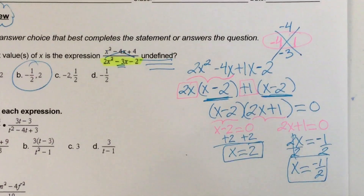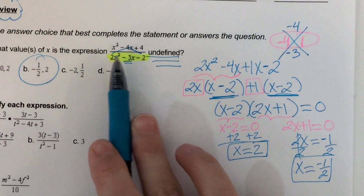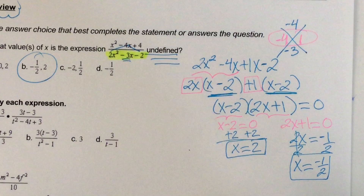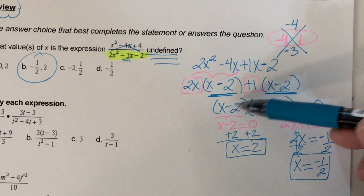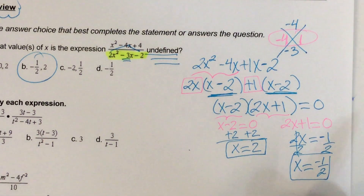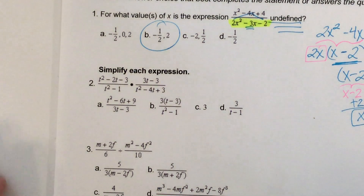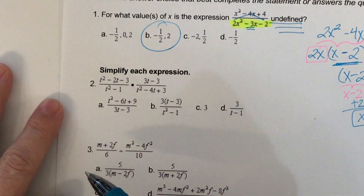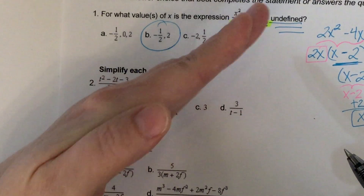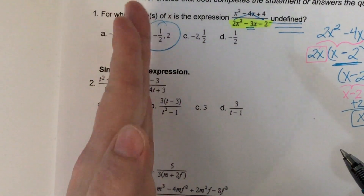So if all it wants to know is where the problem is undefined, only focus on the denominator — make sure it's factored, then set each factor equal to zero. Next one: we're multiplying, so we need to factor anything that can factor, then cross out like factors on diagonals and vertically.